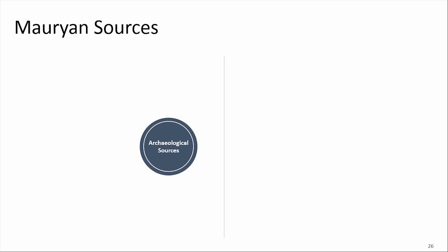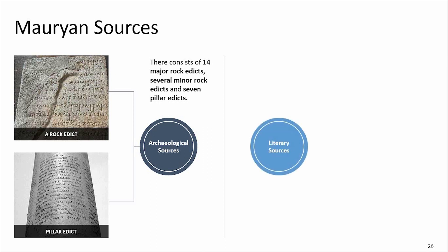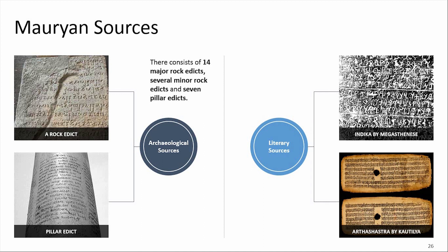Regarding Mauryan sources: we have been introduced to various sources for the study of the pre-Mauryan and Mauryan era. For archaeological sources, we studied inscriptions — mainly pillar edicts and rock edicts, consisting of 14 major rock edicts, several minor rock edicts, and 7 pillar edicts. For literary sources, Indica written by Megasthenes and Arthashastra by Kautilya are important sources of information.